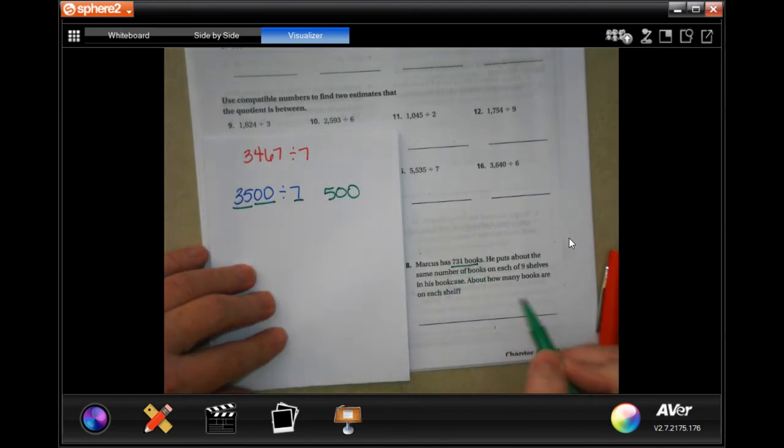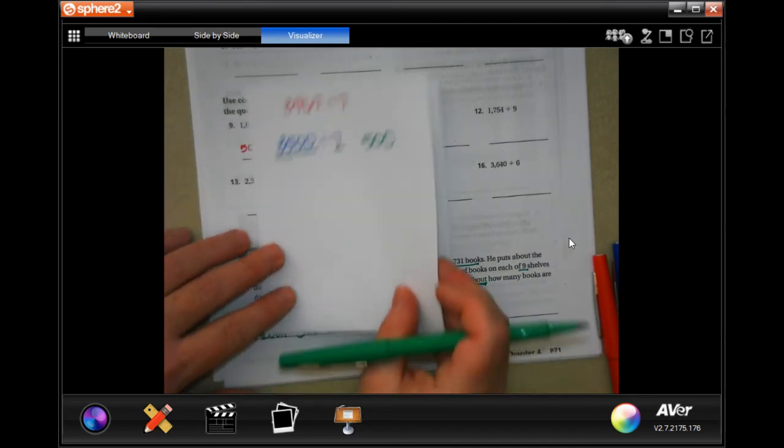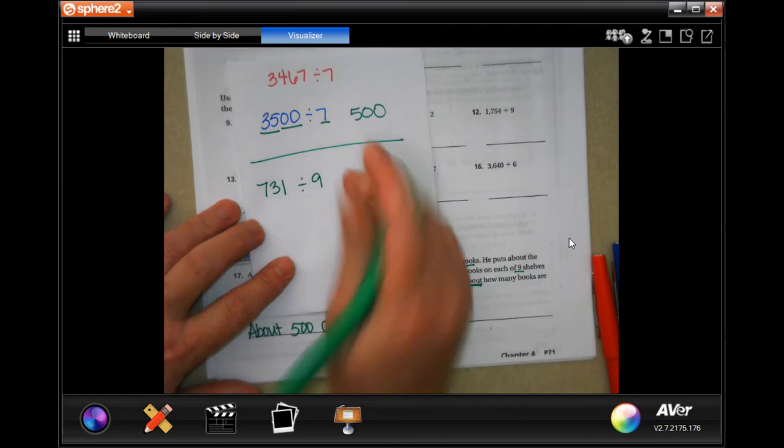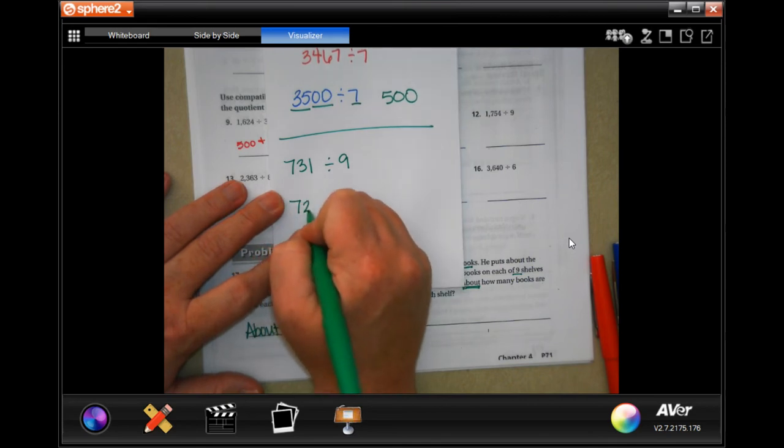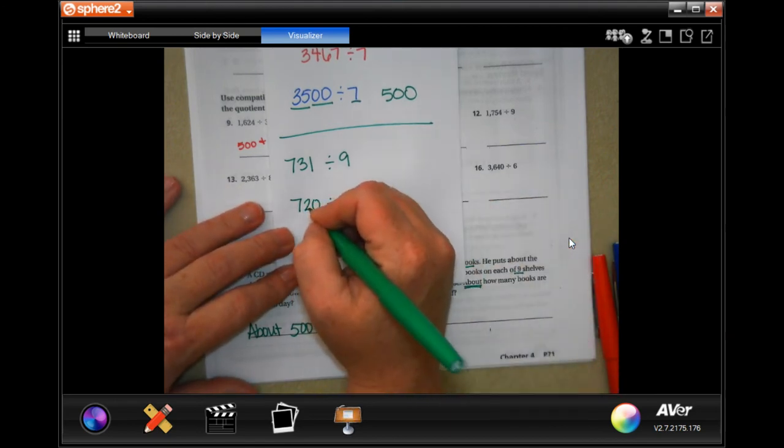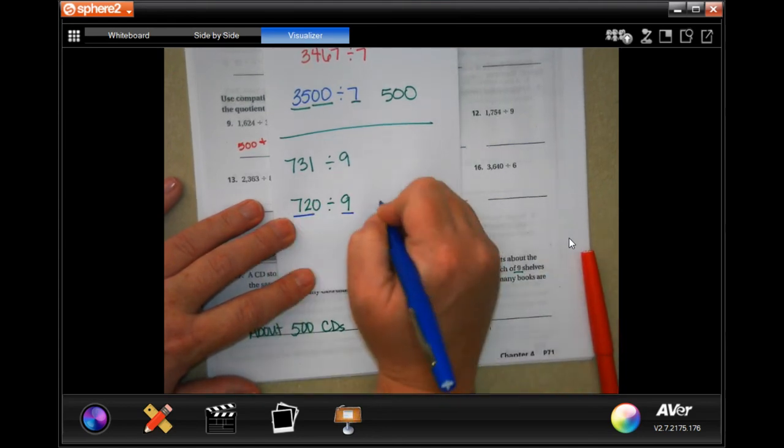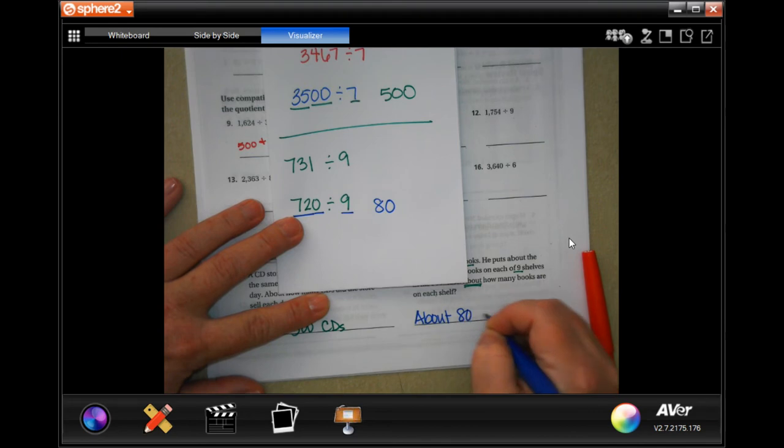All right, Marcus had 731 books. He puts the same number of books on each of nine shelves on his bookcase, about how many books are on each shelf. So when you take 731, we're going to divide that by nine. Well, nine doesn't go into 73 equally, but it goes into 72. So I'm going to put 720 divided by nine, because my next one is 810 and that doesn't make sense. So 9 goes into 72 eight times, then I add that zero, about 80 books.